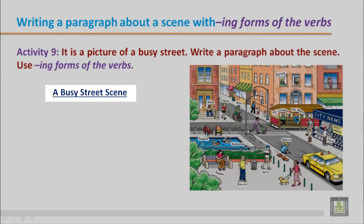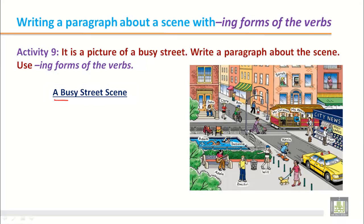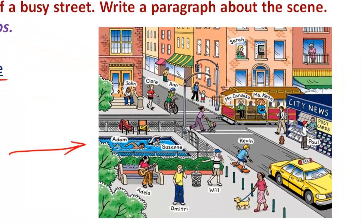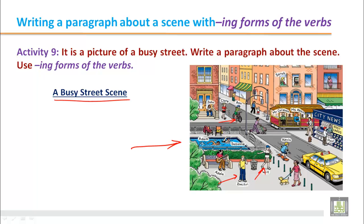The title of the paragraph is 'A Busy Street Scene.' You have to write the title with an underline in the middle of the page and describe the picture — the activities of the people inside it. You can see there are many people doing lots of activities: some people are talking, some are eating, some are cycling. Describe the picture with -ing forms of the verbs.